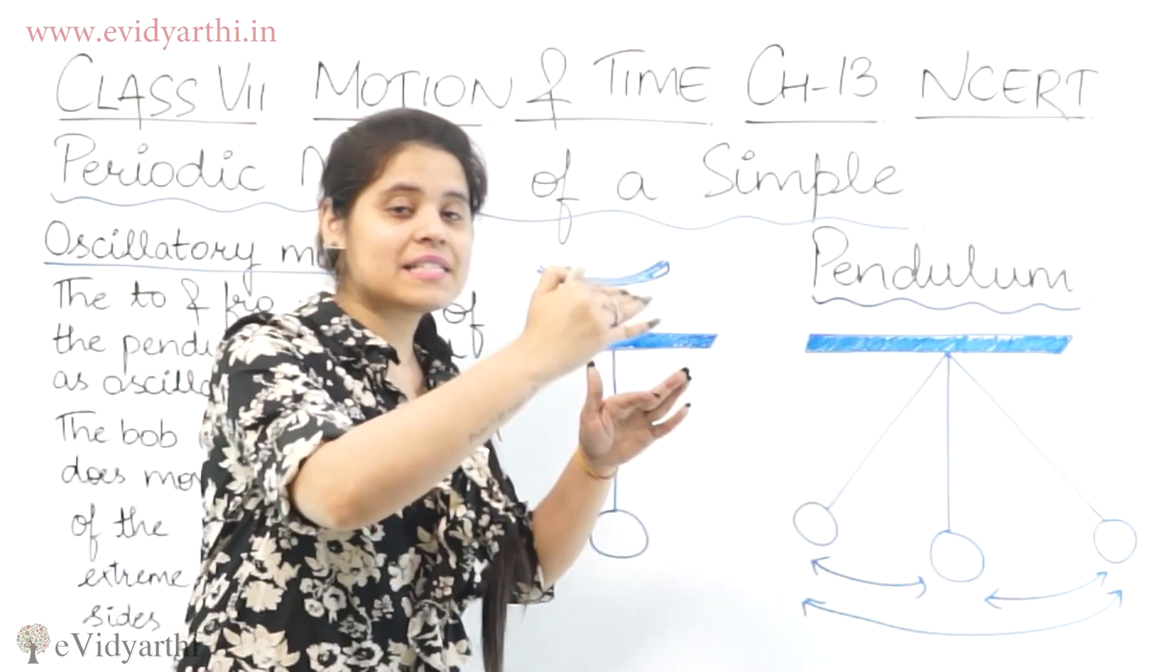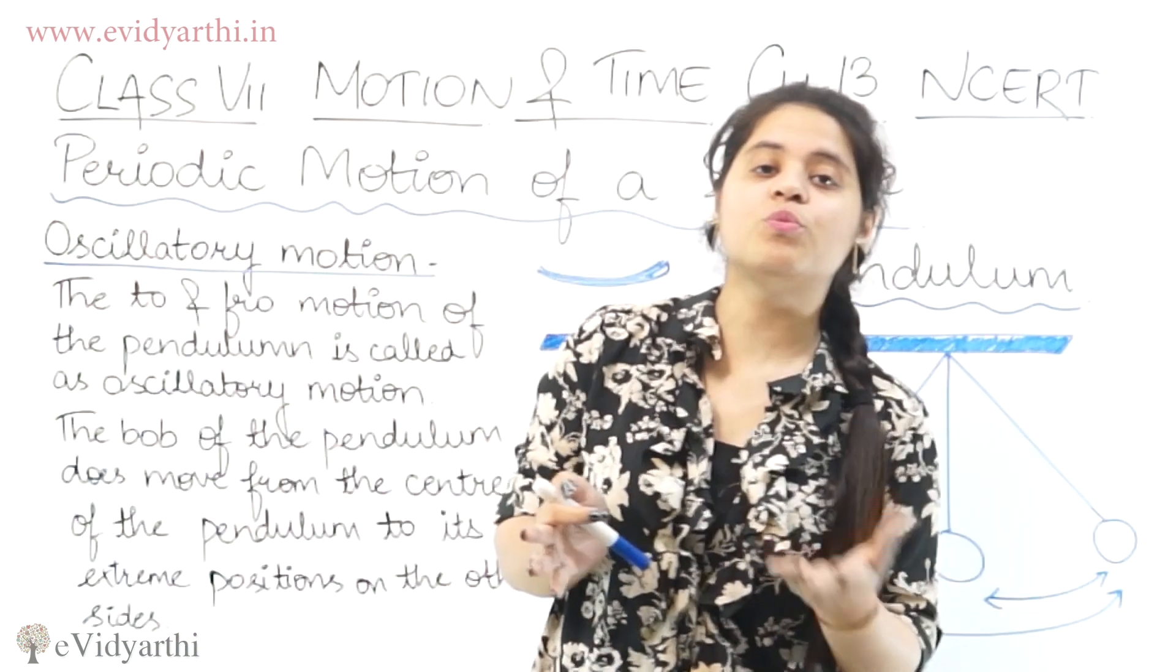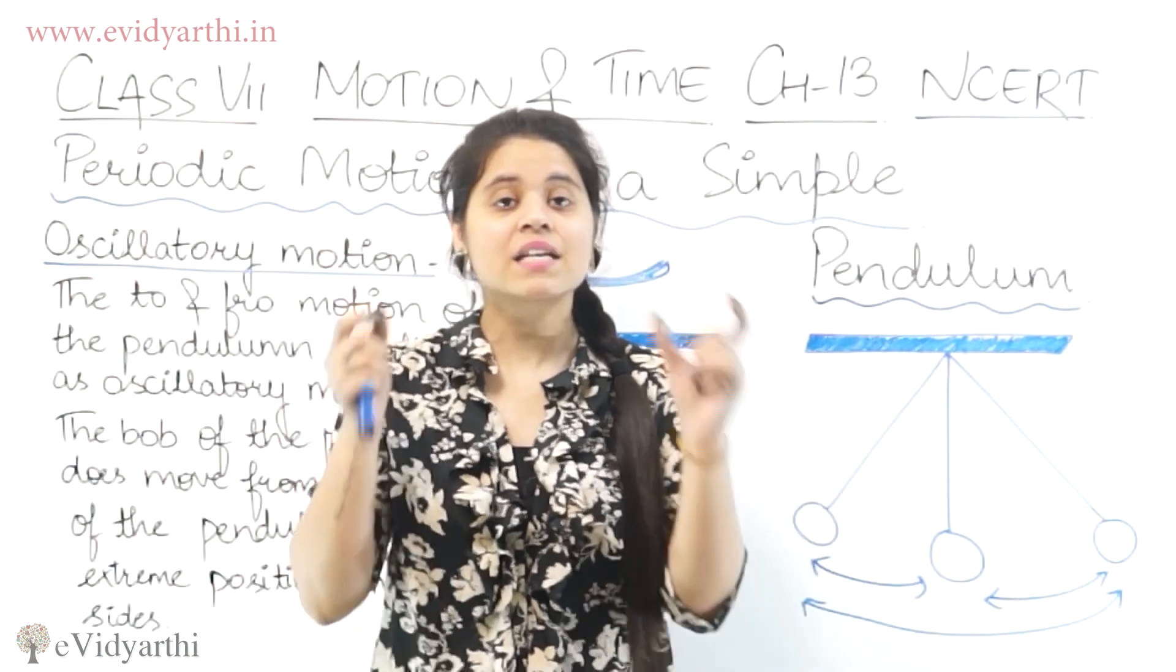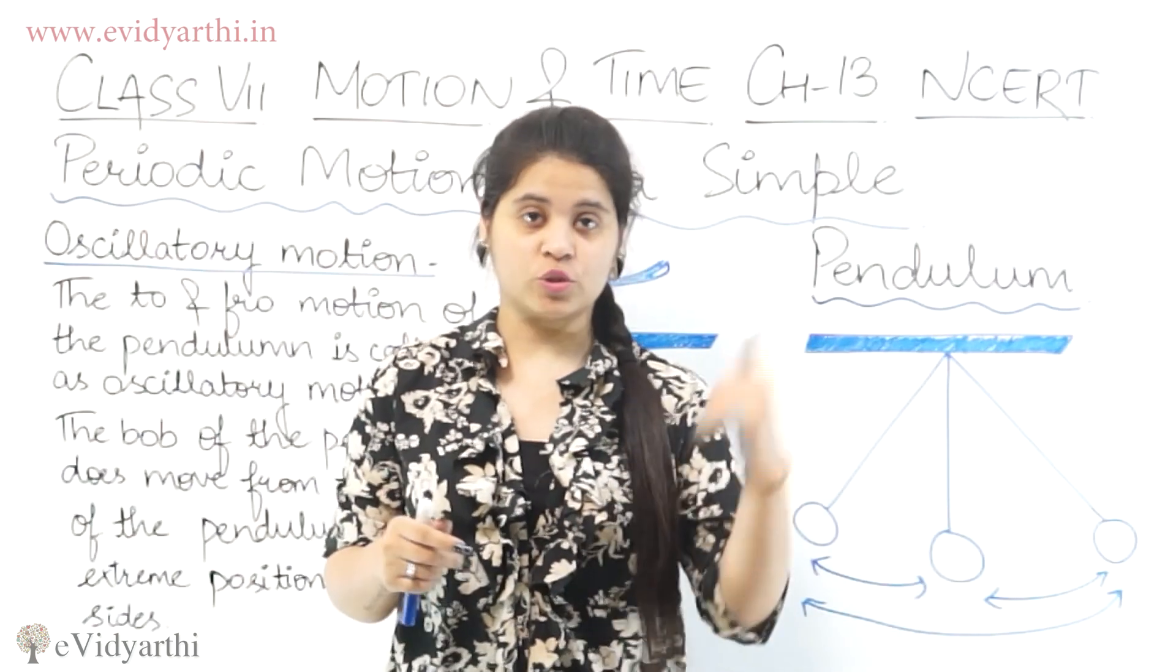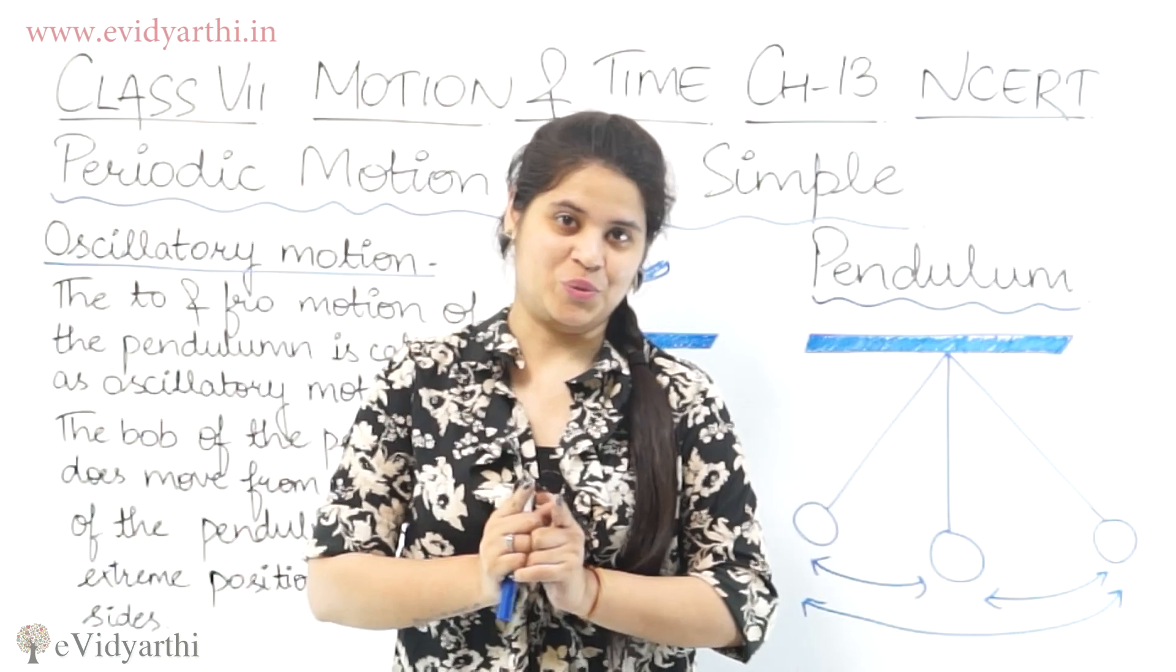So what is happening? It goes from the center to one end to the other area. So that is the to and fro movement. And this is what we call as oscillatory motion. The motion of pendulum is oscillatory motion.